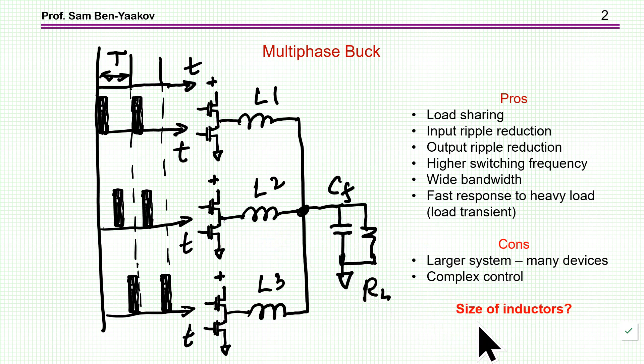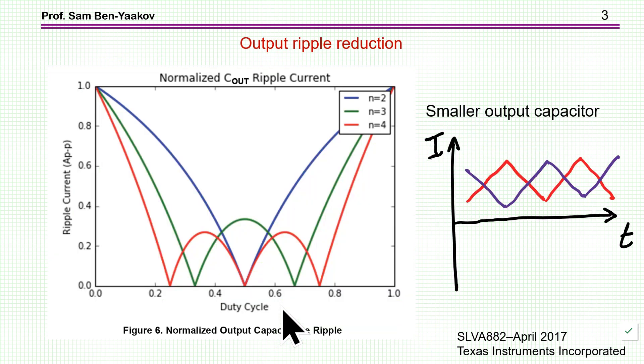Now in this presentation I'm concentrating on the size of inductor. The question is, okay, I have many inductors, what does it mean? Is it going to be an overall smaller inductor, larger inductor, and to what extent? Now here I'm showing some pictures of the ripple cancellation. This is the output ripple cancellation.